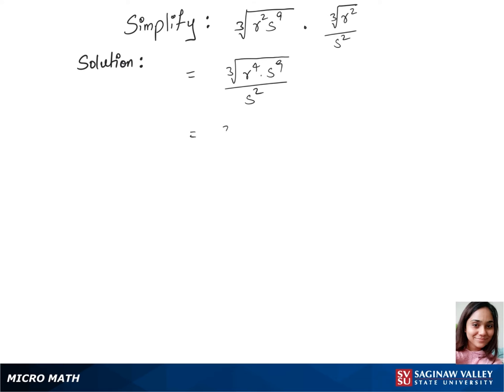In our next step, we'll separate the cubic root. So that's cubic root of r⁴. We'll separate it. So that's r³ times r times cubic root of, we'll write s⁹ as s³ times s³ times s³ over s².